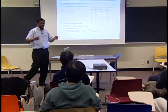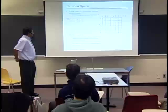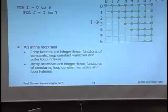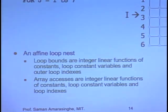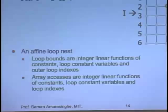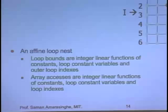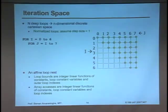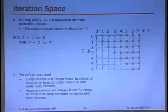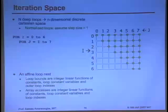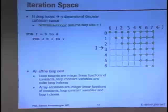Another concept is affine loops. Affine loop bounds are integer linear functions of constants, loop constant variables, and outer loop indices. This makes it much easier to analyze. Array accesses must satisfy the same property — each dimension access function has to be a linear function where all terms are constants, loop constants (variables that don't change in the loop), or outer loop indices. Many programs like FFT don't satisfy this, meaning a compiler probably can't analyze them, but most loops fit this model and can be put into a nice mathematical framework.